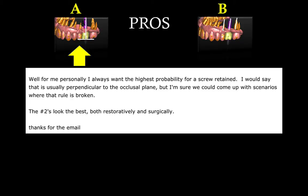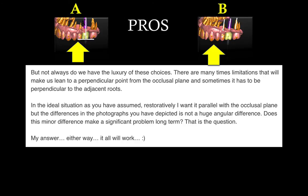I sent the exact same post — the same image you saw on Facebook, option A and option B, which one is best — without too many details, because I really wanted to get to the essence of it. The first prosthodontist that replied said he loves a screw-retained crown, and in regards to implant position he prefers to have it perpendicular to the occlusal plane. He also mentioned you can come up with scenarios where this rule is broken, but generally he prefers option A.